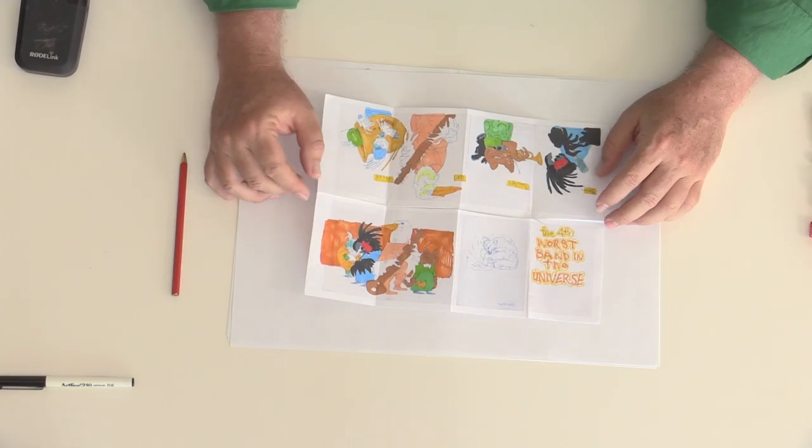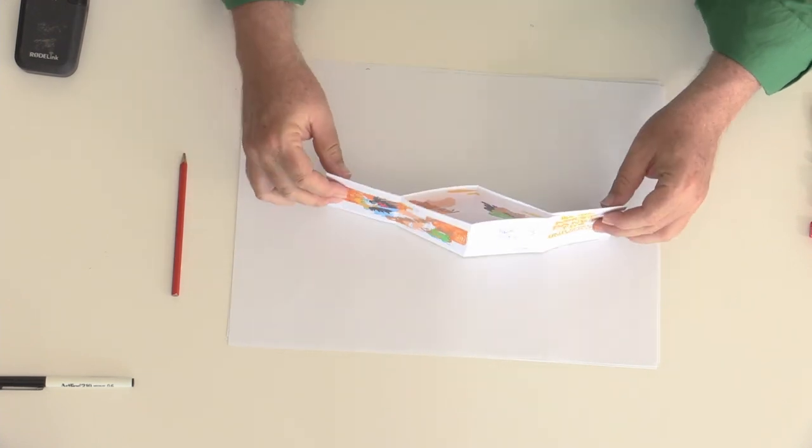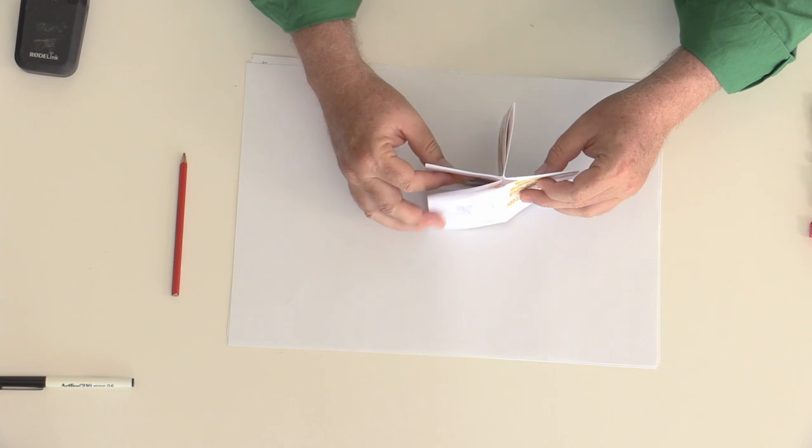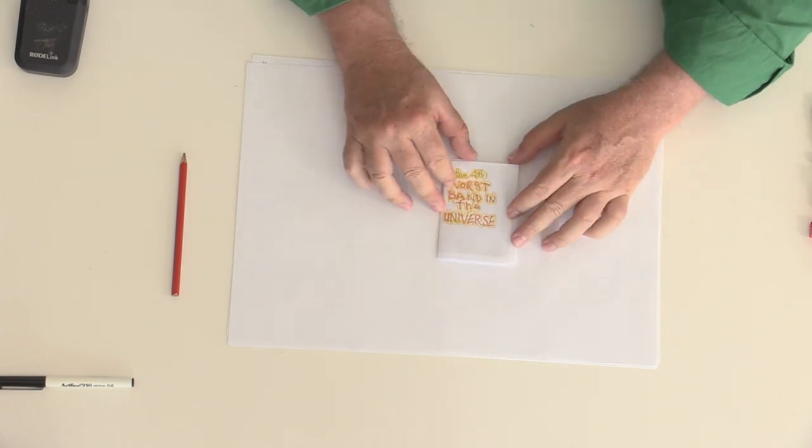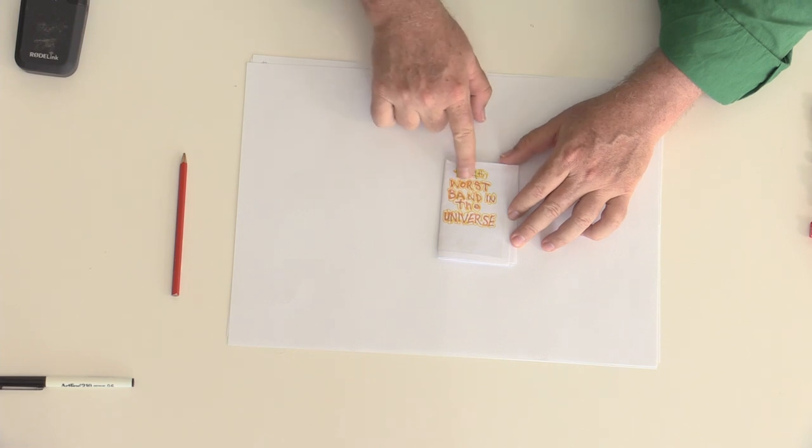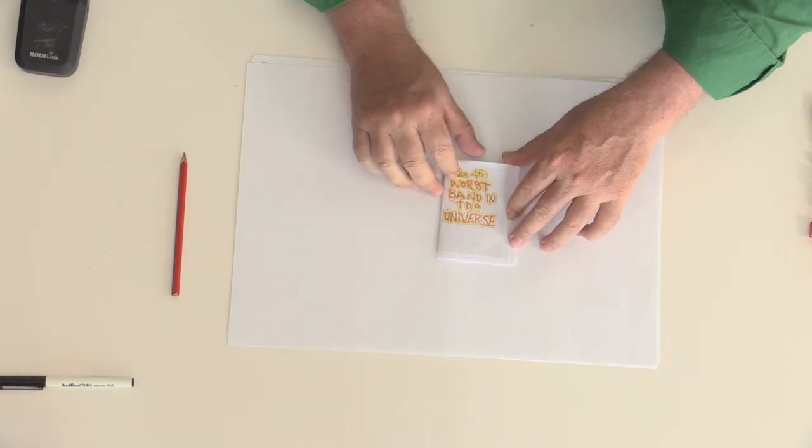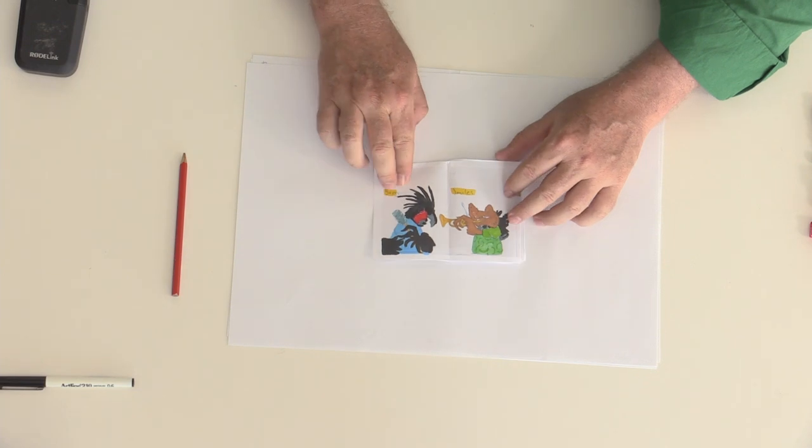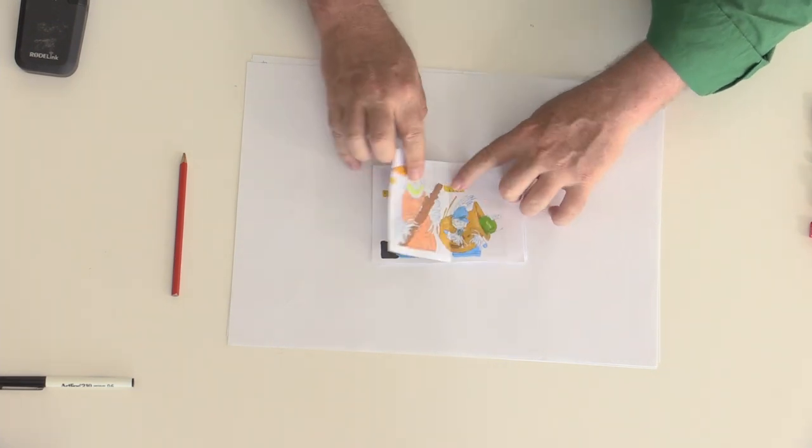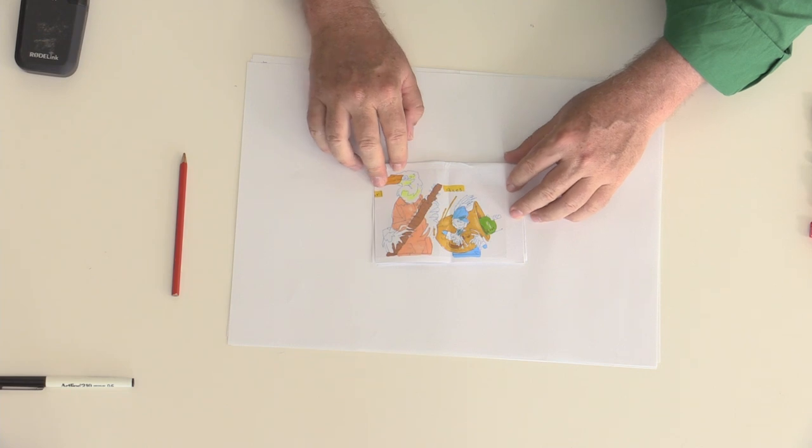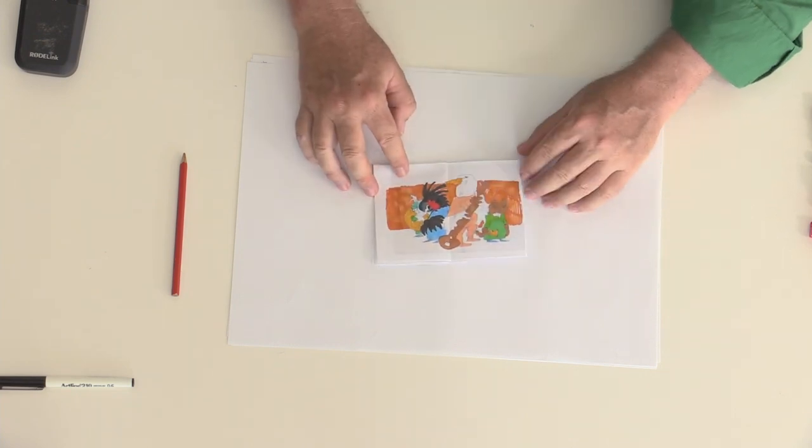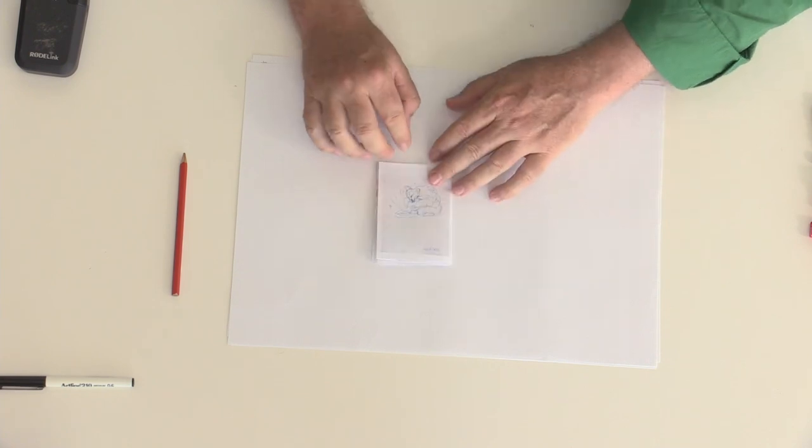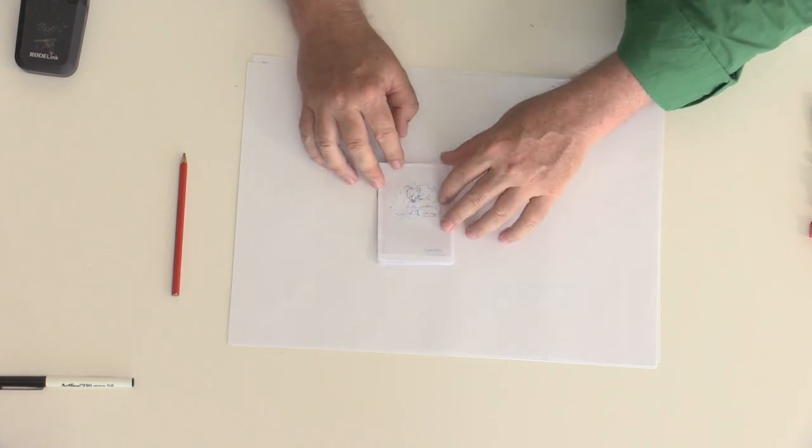And so here we have one that I've started to color earlier and you can see it still has the folds ready to go so that I have front cover, the fourth worst band in the universe. Because obviously the worst band in the universe had to compete against somebody and these were one of the other bands that didn't do as well. So we have Brun, Smiles, Earl and Aces and then there's the group playing and then sometimes there's this DJ that helps them out.